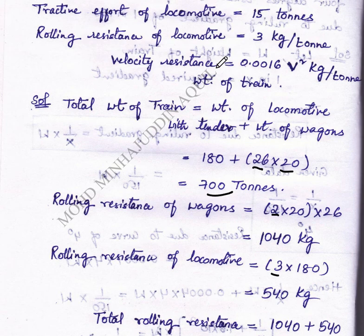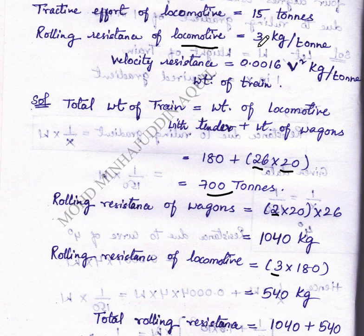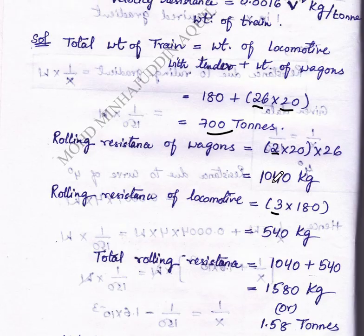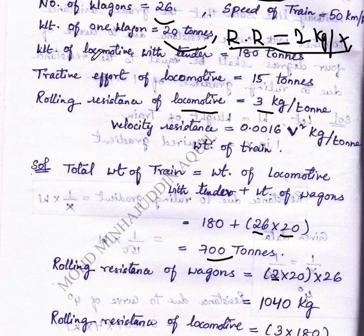Next, rolling resistance of locomotive equals 3 into 180, where 3 is the rolling resistance of locomotive in kilograms per ton, into 180, the weight of locomotive with tender as 180 tons.